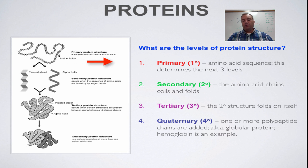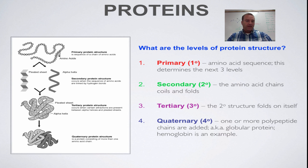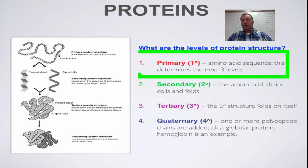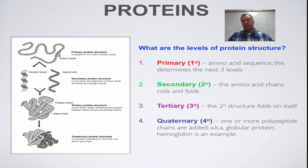There are four levels of protein structure, and they're creatively called primary, secondary, tertiary — because there's no word called thirdary — and then quaternary. The most important level is primary, because the primary structure determines the next three. The primary structure is simply the amino acid sequence. There are 20 different amino acids, and depending on the sequence, those amino acids — specifically the side chains or R groups — are going to interact with each other, causing the protein to either twist, fold, or both.